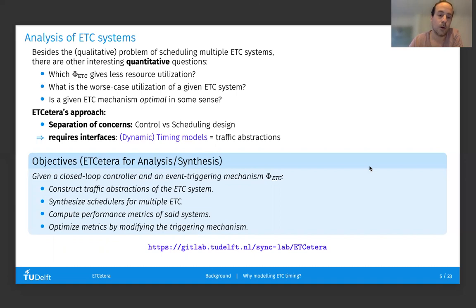So, the objective of ETCetera is to provide an automated method to construct traffic abstractions, synthesize schedulers for multiple event-triggered controllers, compute performance metrics, and even optimize for these performance metrics, possibly modifying the event-triggered mechanism. The toolbox is available in the link below with all the documentation, and it takes the form of a library for Python.